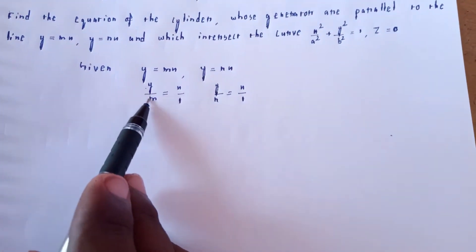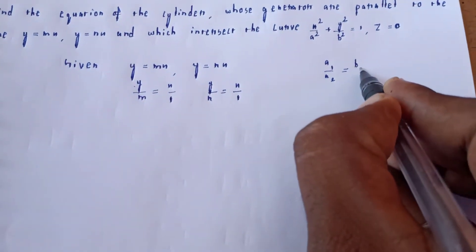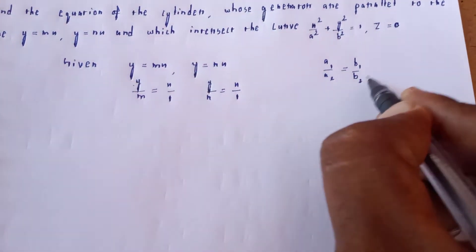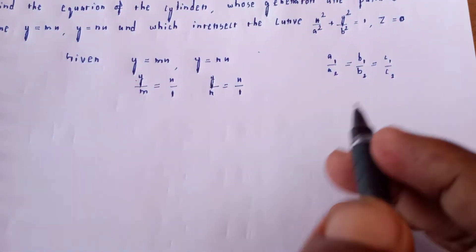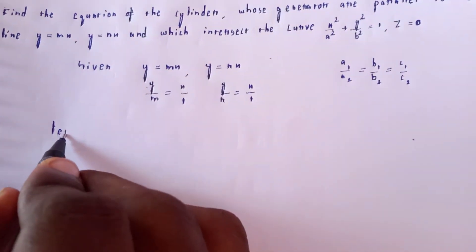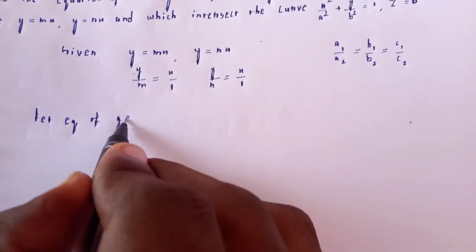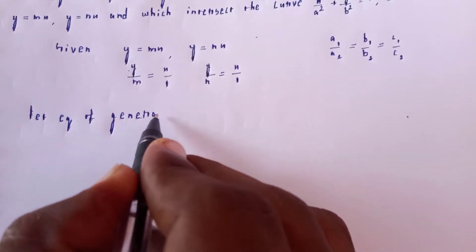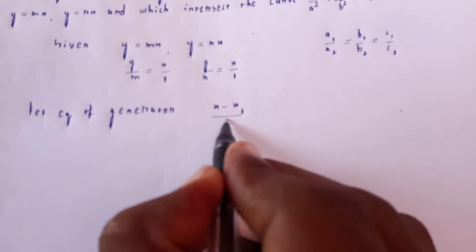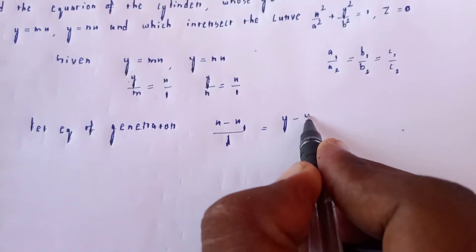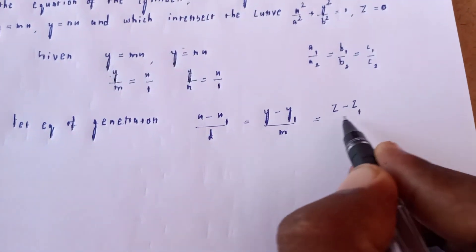The parametric form is written as: x minus x1 by l equal to y minus y1 by m equal to z minus z1 by n, where l, m, n are the direction ratios of the generators.